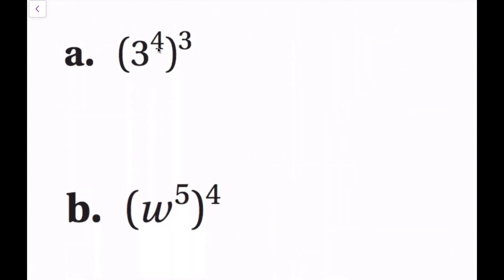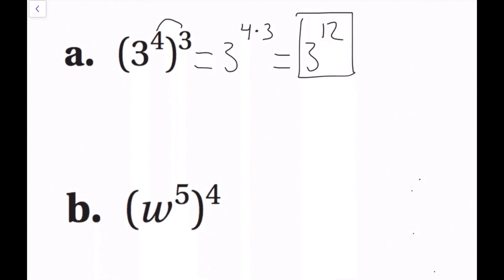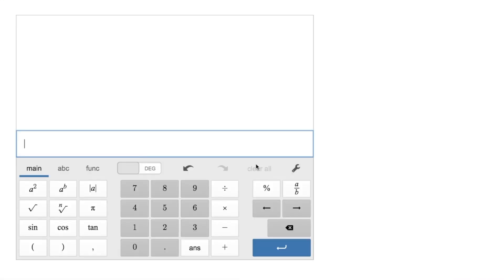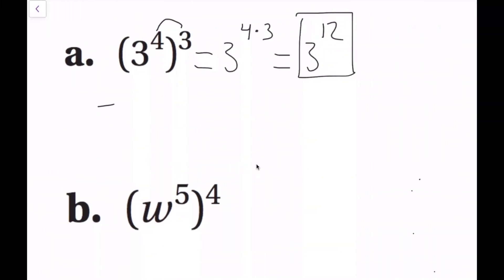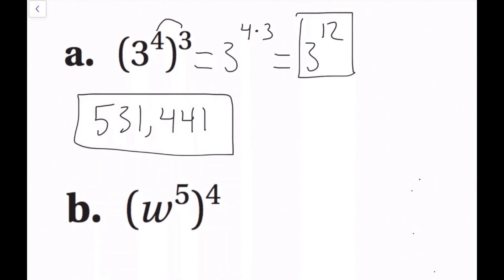Now, for this example, we have three to the fourth power, and that entire quantity is being taken to the third power. When a power is raised to another power, we multiply the exponents. So this becomes three to the four times three power, which equals three to the twelfth power. If we wanted to simplify fully, three to the twelfth equals 531,441.